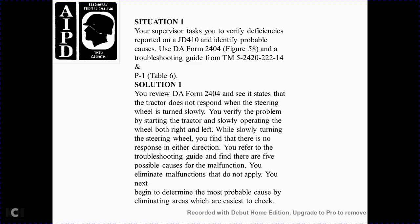Situation 1: The DA Form 2404 reports that the tractor does not respond when the steering wheel is turned. You verify the problem by slowly operating the steering wheel both left and right, and find there is no response in either direction. The troubleshooting guide identifies five possible causes of the malfunction. You must eliminate malfunctions that do not apply, beginning with the most probable cause and eliminating from the easiest to check.